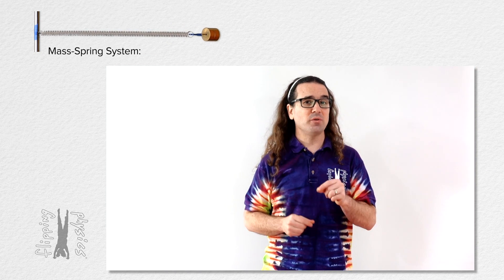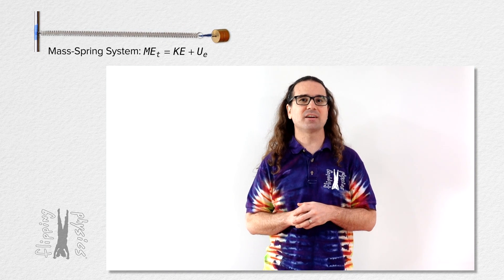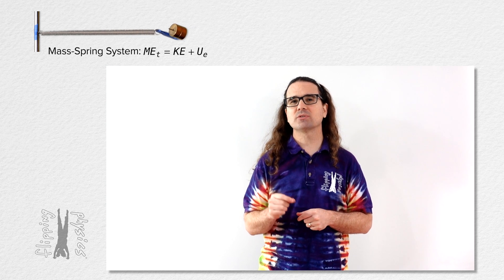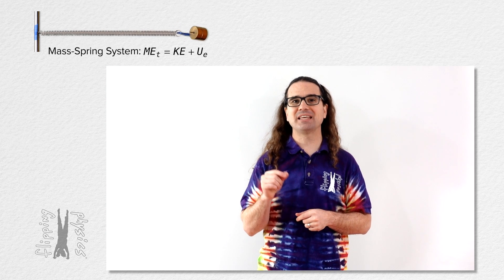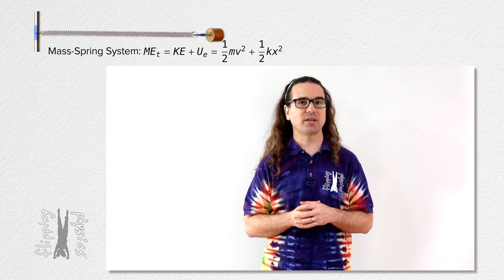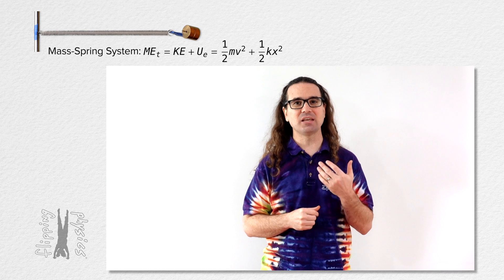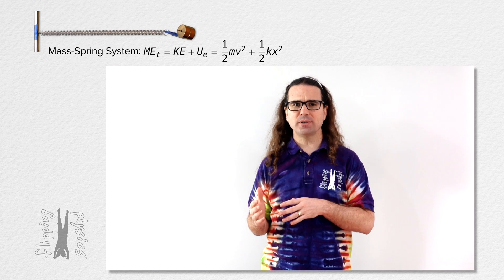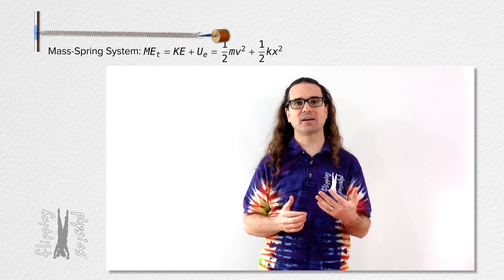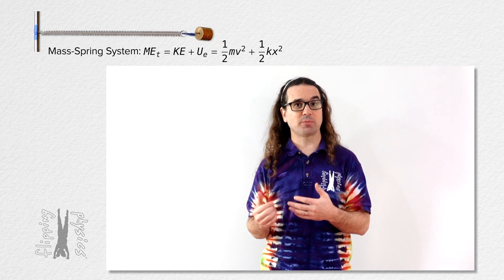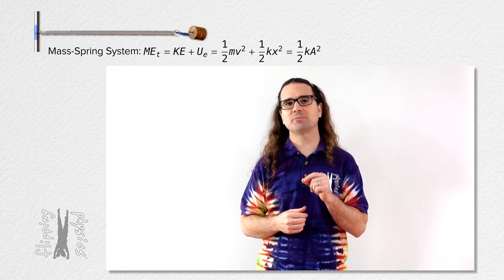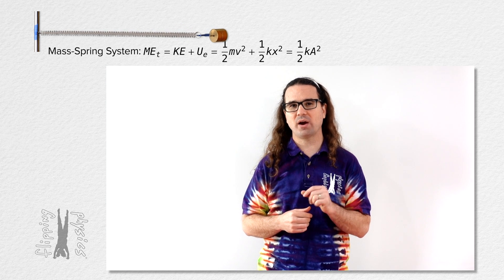We know the total mechanical energy of a horizontal mass-spring system equals the sum of the kinetic and elastic potential energies at any point. And we already determined that the total mechanical energy of a mass-spring system equals one-half spring constant times amplitude squared.